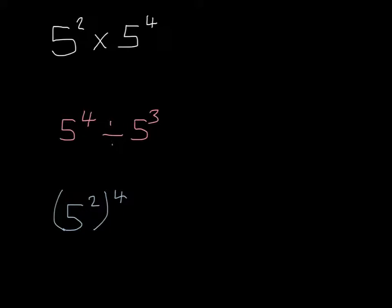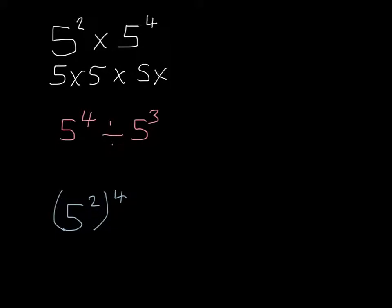Starting with the top one over here, we've got 5 squared times 5 to the power of 4. In order to work this out, I need to think about how many 5s I'm multiplying together. 5 squared is going to be 5 times 5, and then we've got 5 to the power of 4, which is going to be 5 times 5 times 5 times 5.